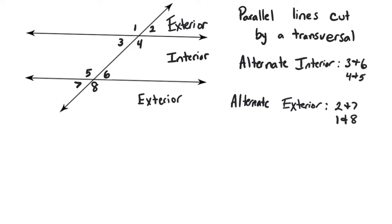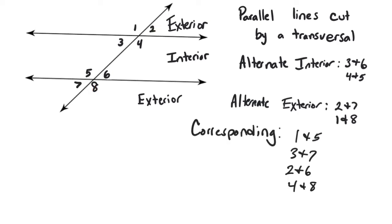Other sets of congruent angles would be the corresponding angles — those are the ones in the same position. Whatever position an angle is in at the lower intersection, the angle in the same position at the upper intersection is going to be congruent. So angle five corresponds to angle one, and three corresponds to seven — those are congruent to each other. Four and eight would be corresponding, and also two and six. All corresponding pairs are congruent as well.